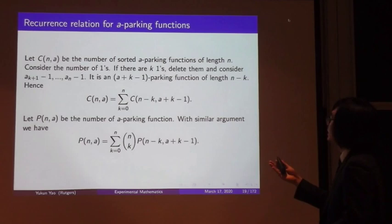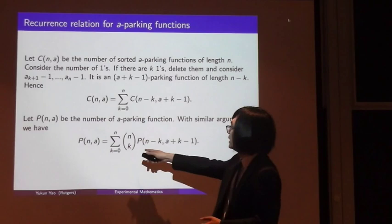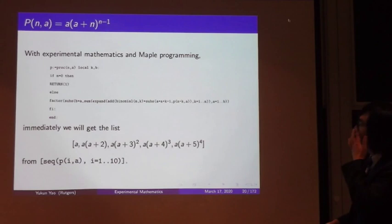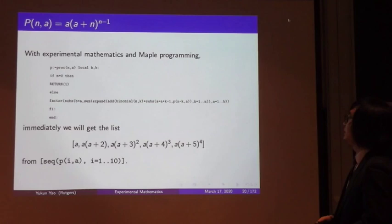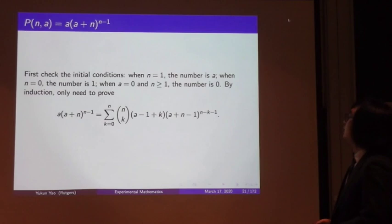Let c(n,a) be the number of sorted a-parking functions of length n. We derive a recurrence by considering the number of ones: if there are k ones, deleting them gives an (a+k-1)-parking function of length n-k. Similarly, p(n,a) counts all a-parking functions; its recurrence includes a binomial factor n choose k for the positions of the ones. Using experimental mathematics and Maple programming, we conjecture that p(n,a) = a · (a+n)^(n-1).